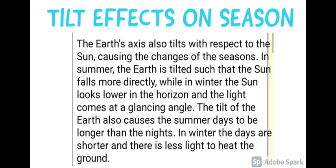The Earth's axis also tilts with respect to the Sun, causing the changes of the seasons. In summer, the Earth is tilted such that the Sun falls more directly, while in winter the Sun looks lower on the horizon and the light comes at a glancing angle. The tilt of the Earth also causes summer days to be longer than the nights. In winter, the days are shorter and there is less light to heat the ground.